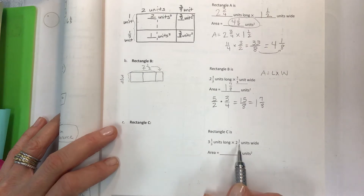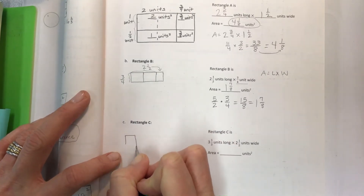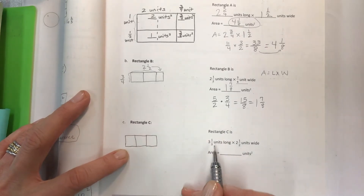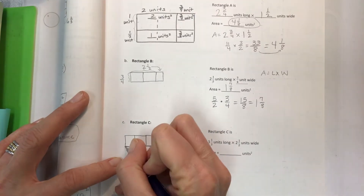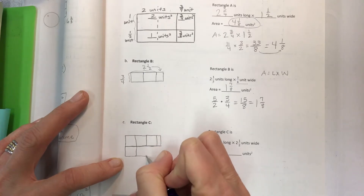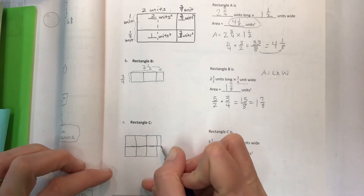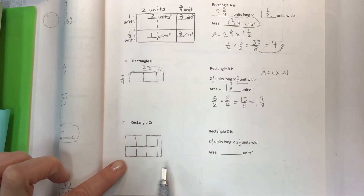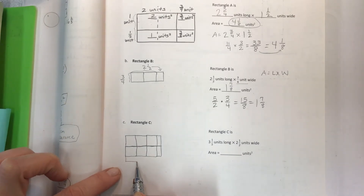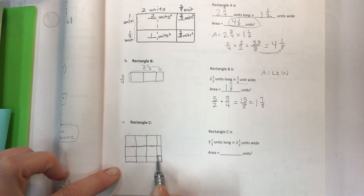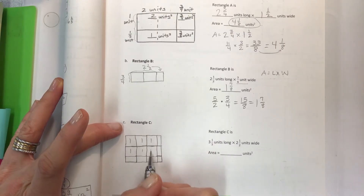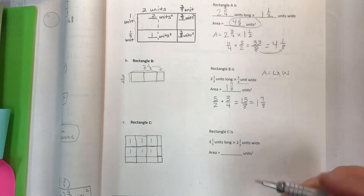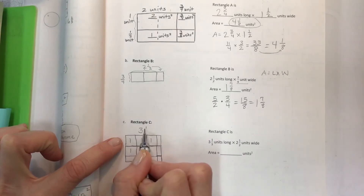Rectangle C: three and one-third units long and two and a half units wide. I do get to make full squares this time — one, two, three and a third across. Then two and a half down: two full rows of squares. We still need the third on the second row, but the last row across only uses the half — so there's a short strip and a funny little fractional piece in the corner. Label the sides three and one-third and two and a half, and plug into the formula.